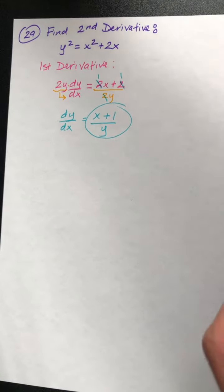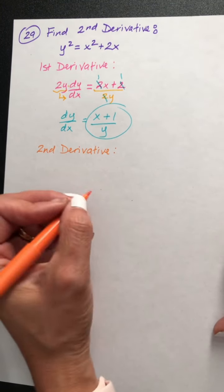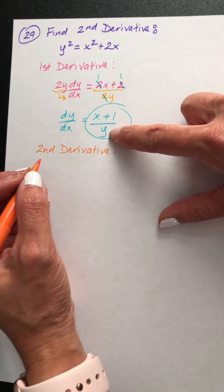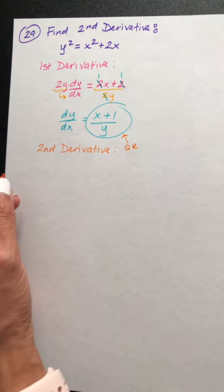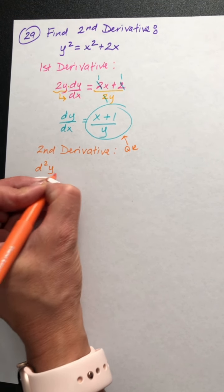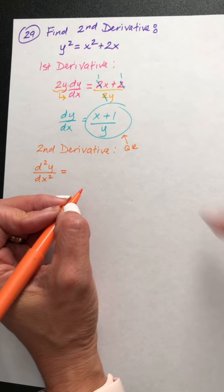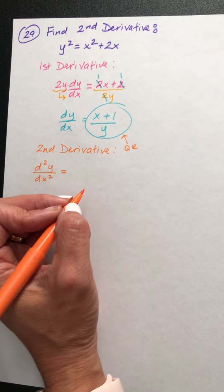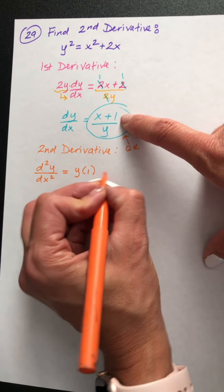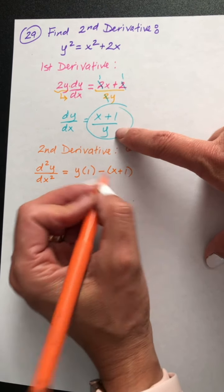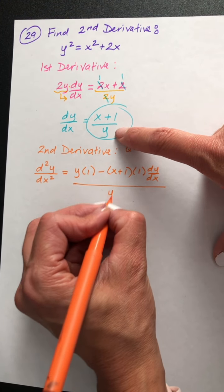Now let's find the second derivative. Because I have a quantity divided by a quantity — a fraction — I'm going to have to use the quotient rule. The notation for the second derivative is d squared y over dx squared. It's a fraction, so: low d high minus high d low, over low squared. Low is y, times the derivative of the high — derivative of x plus 1 is just 1.